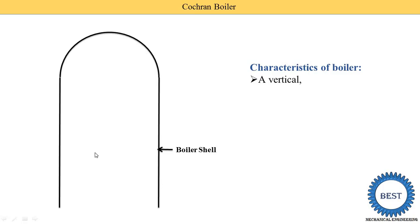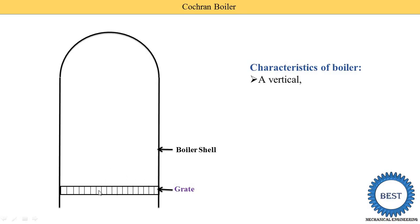When we view this boiler shell from the top or bottom, it has a circular cross-section. At the lower part of the boiler, the grate is provided, and this grate is used for placing the different fuel for combustion purposes. Here we provide one furnace — this area is closed and is known as the furnace.